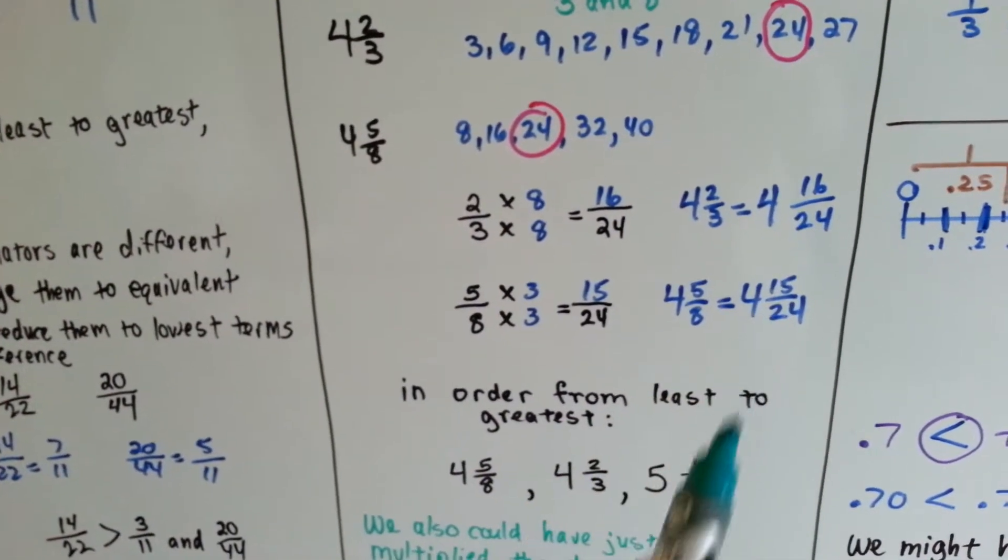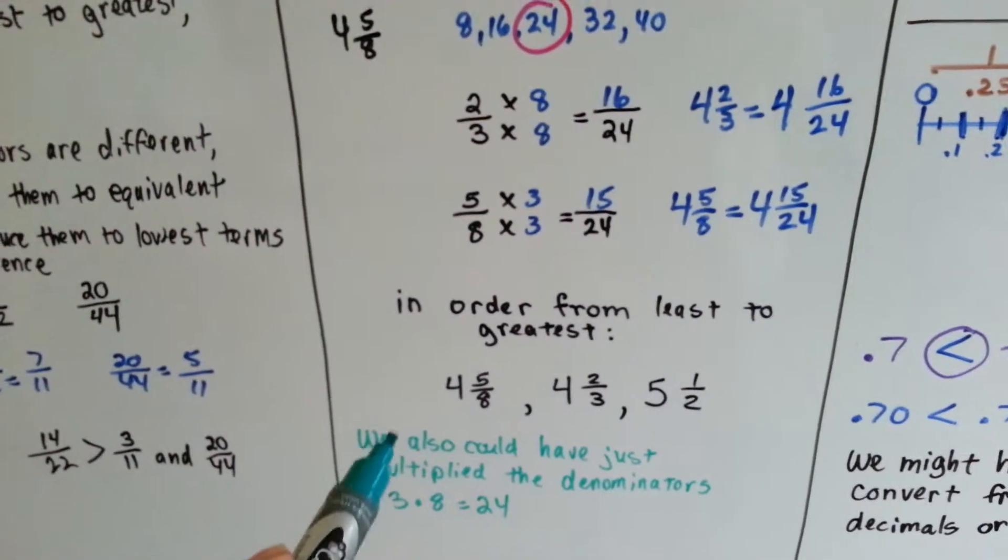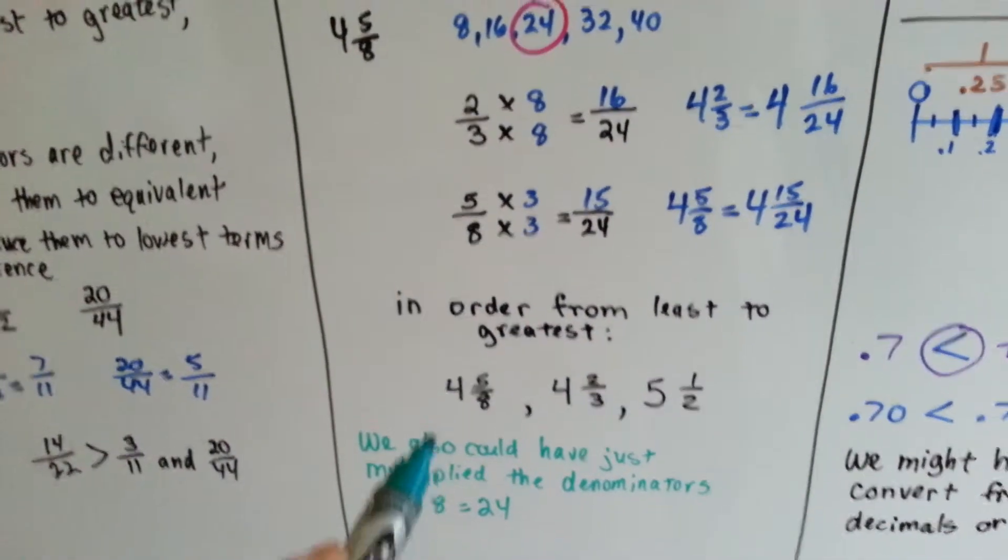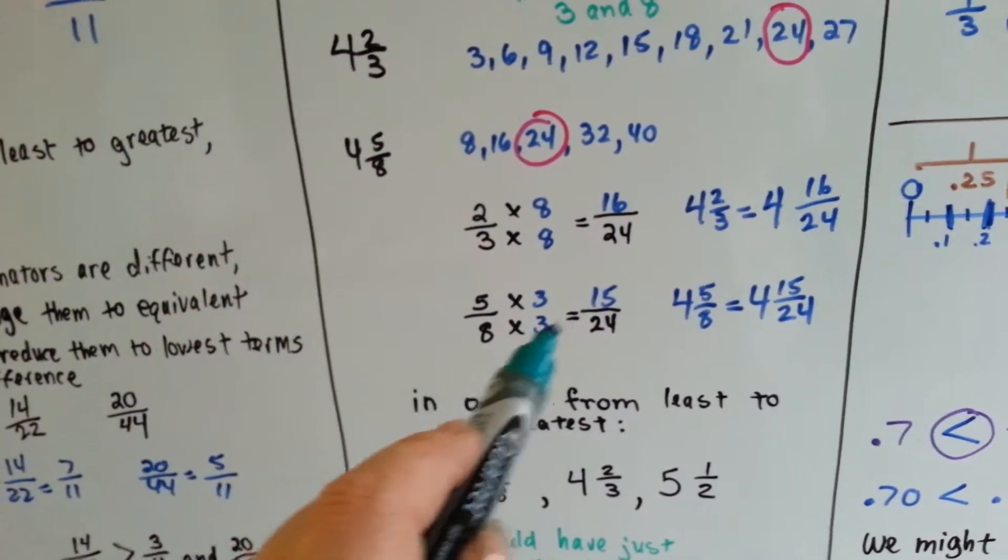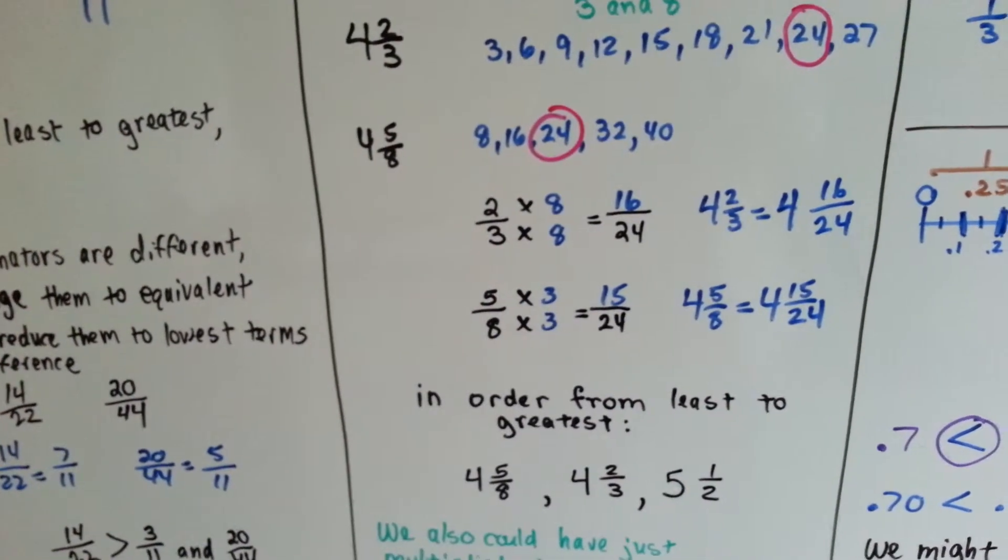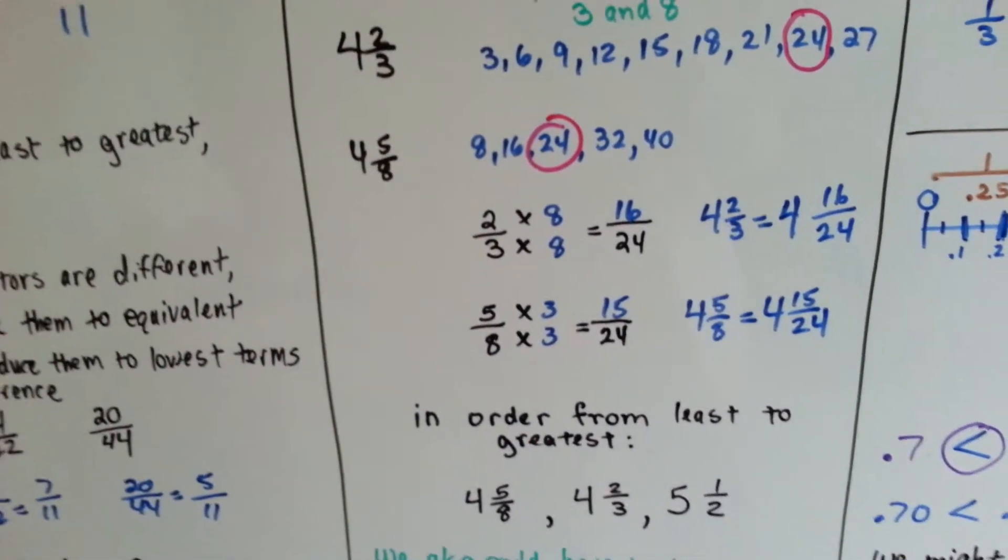We also could have just multiplied the 3 times the 8, and we would have gotten to twenty-four, and then found out what they needed to get to twenty-four, and then made the numerator do the same thing.